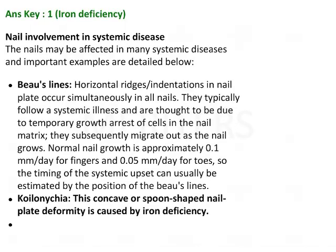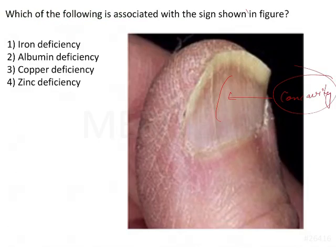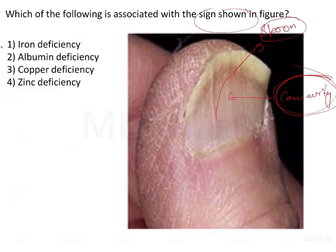So if we go back to the question: which of the following is associated with the sign shown? The sign is showing the concavity and the nails are spoon-shaped, meaning koilonychia is present. This is generally seen in iron deficiency, as already discussed.